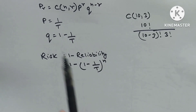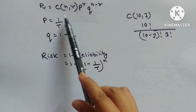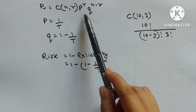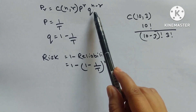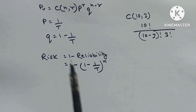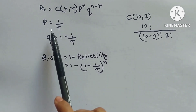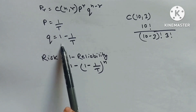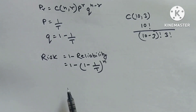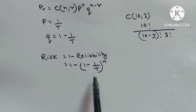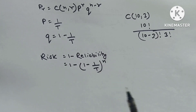Probability formula: Pr = C(n,r)·p^r·q^(n−r), where p = 1/T, q = 1 − 1/T. Risk = 1 − reliability = 1 − (1 − 1/T)^n.